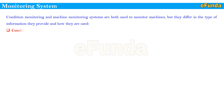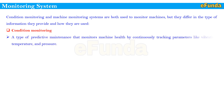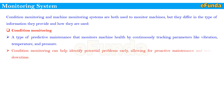First is condition monitoring — a type of predictive maintenance that monitors machine health by continuously tracking parameters like vibration, temperature, and pressure. Condition monitoring can help identify potential problems early, allowing for proactive maintenance and reduced downtime.